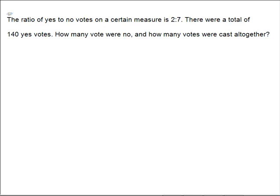Assuming you've paused it and tried it out, let's read it together and do the problem. The ratio of yes to no votes on a certain measure is 2 to 7. So yes to no is given as 2 to 7.